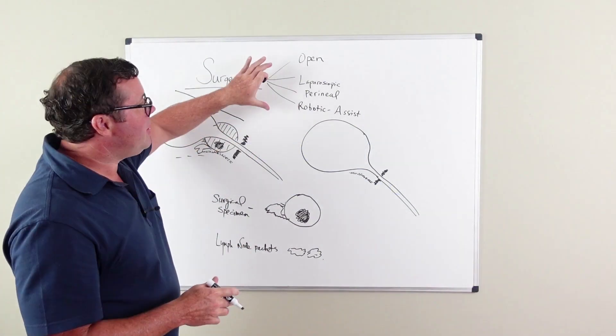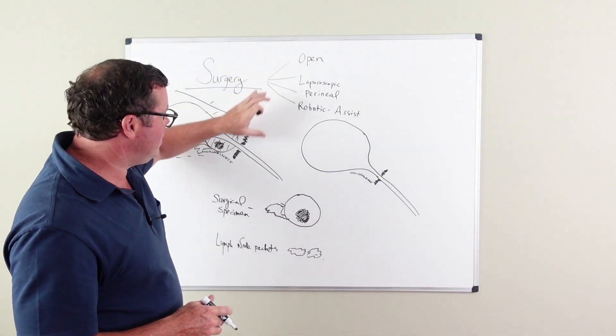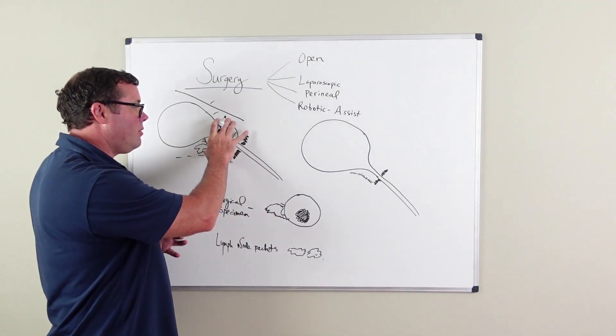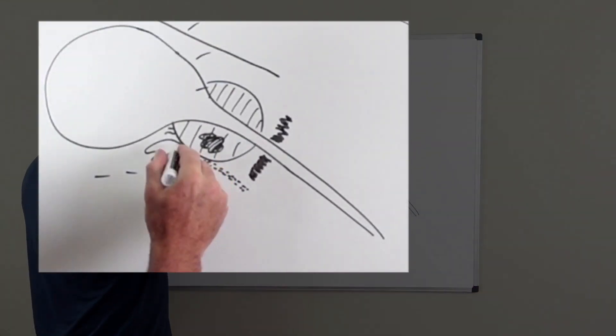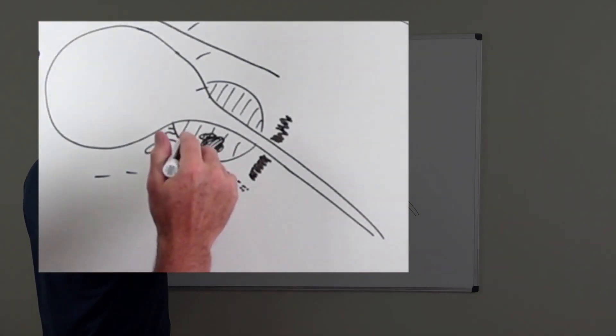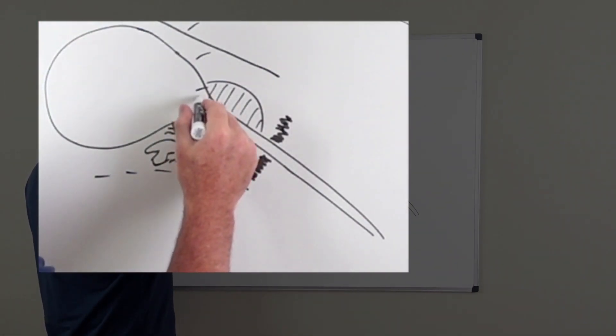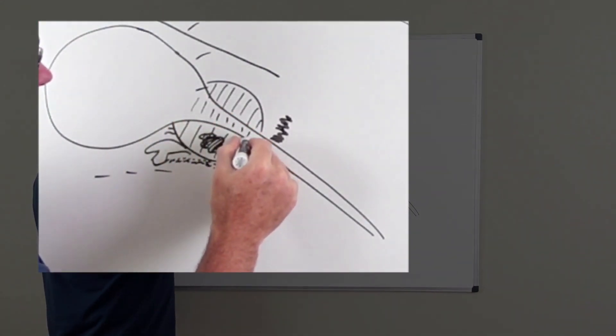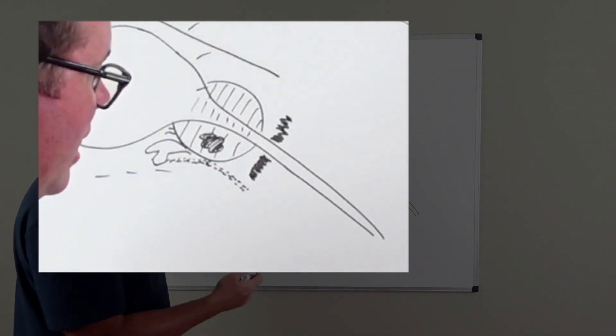So regardless of the way your surgery is done, the goal of surgery is to remove that prostate, remove the seminal vesicles, remove that vas deferens tube. And then also this inner part of urethra is removed. That's called the prostatic urethra.